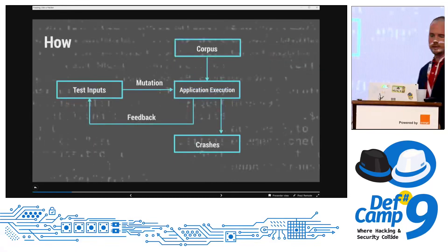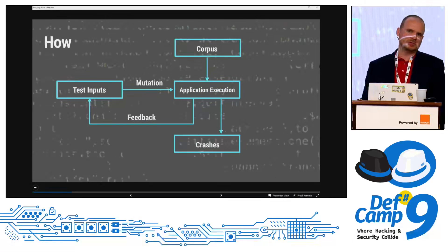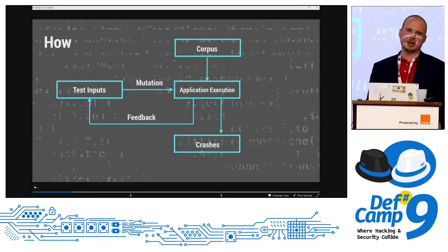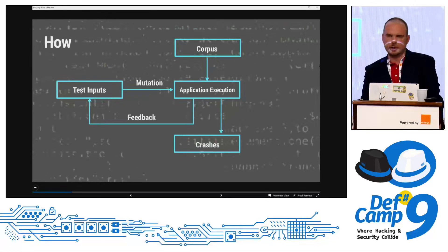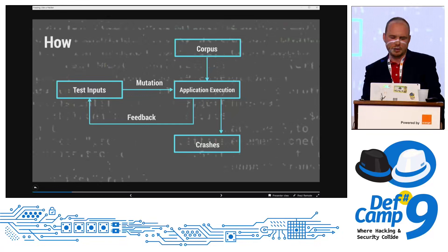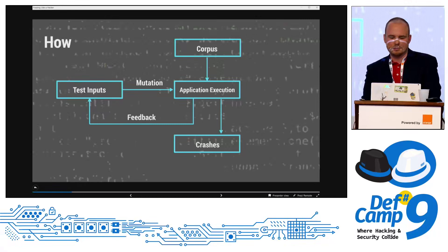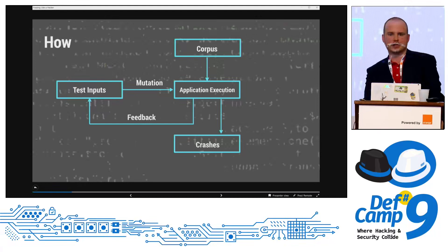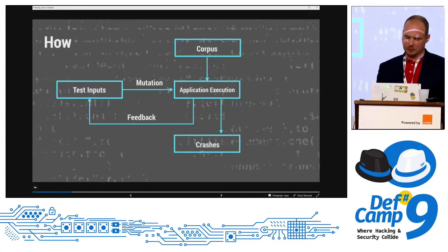So how it works in general. Everything starts from a corpus. We need to define a corpus, an initial test case. Then AFL takes those and runs through the application. The application creates some feedback, and based on the feedback, the initial files are chosen for mutation and for further fuzzing. After every mutation that AFL does, there's feedback on whether this was interesting, if there was a crash, or we should just skip this test case.